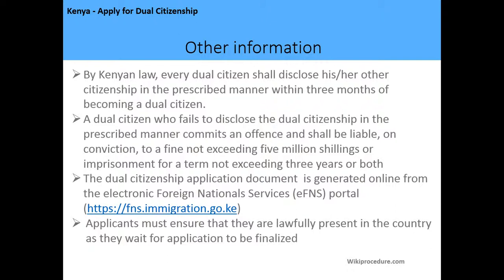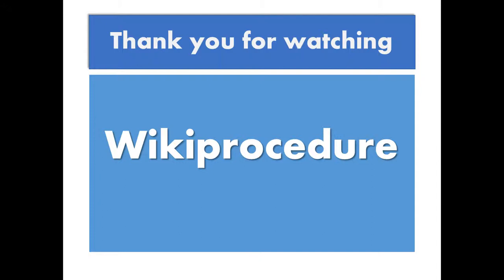By Kenyan law, every dual citizen must disclose their other citizenship in the prescribed manner within three months of becoming a dual citizen. A dual citizen who fails to disclose this commits an offense and shall be liable, upon conviction, to a fine not exceeding five million shillings, or imprisonment for a term not exceeding three years, or both. The dual citizenship application document is generated online from the Foreign National Service portal, and applicants must ensure they are lawfully present in the country while waiting for their application to be finalized.